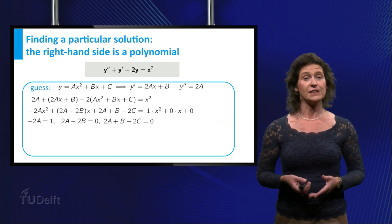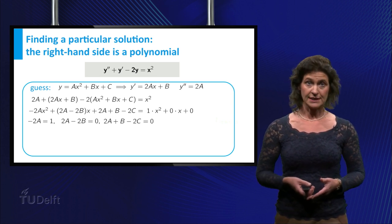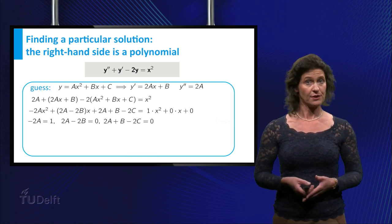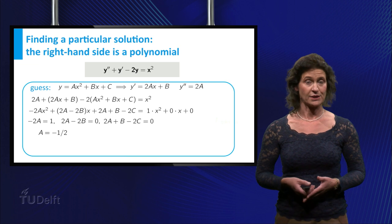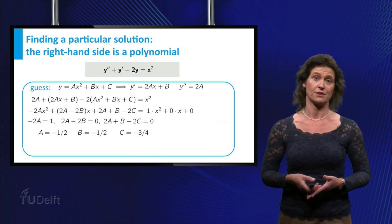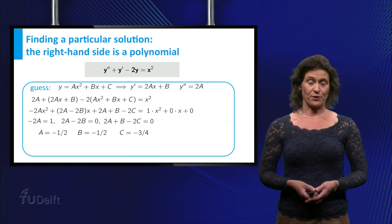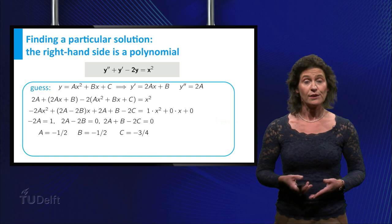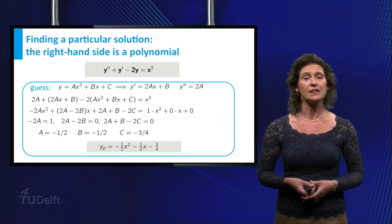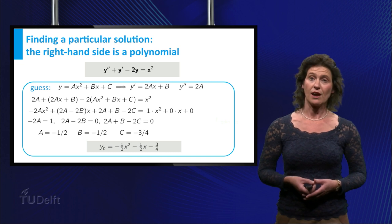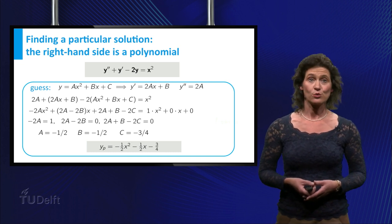Solving these three equations for a, b and c gives a equals minus 1 half, b equals minus 1 half and c equals minus 3 fourth. So a particular solution for our non-homogeneous equation apparently is y equals minus 1 half times x squared minus 1 half times x minus 3 fourth.